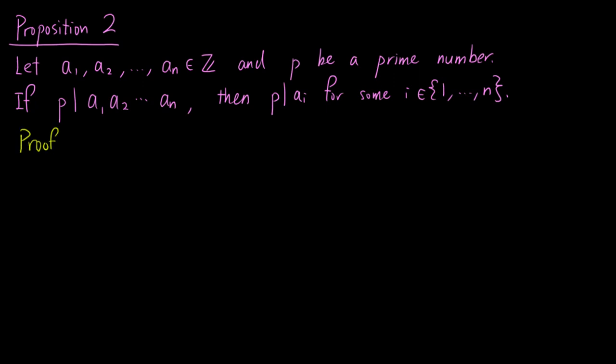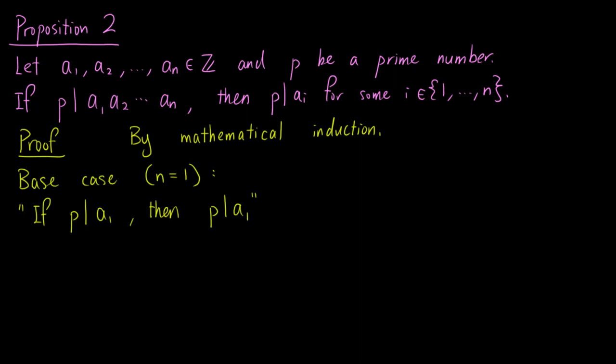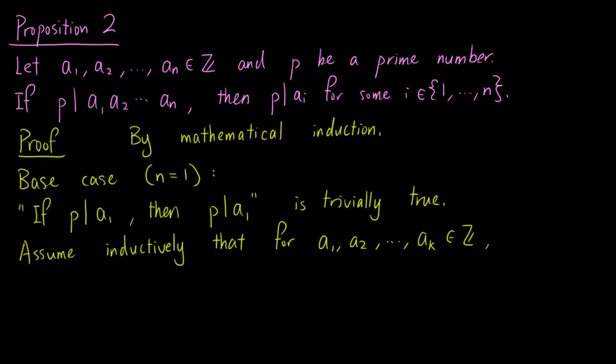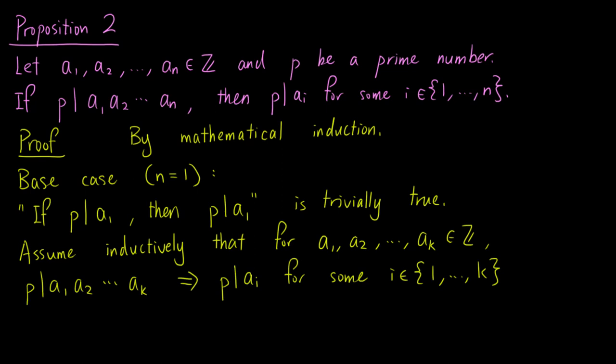We prove the result using mathematical induction. The base case, where n equals 1, states that if p divides a1, then p divides a1, which is trivially true. Assume inductively that for integers a1, a2 up to ak, if p divides the product of a1, a2 up to ak, then p divides ai for some i in the set 1 to k. Let's call this (★).